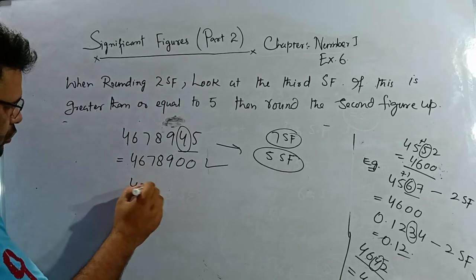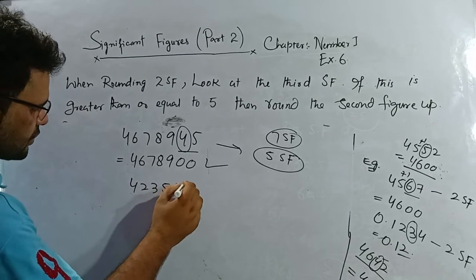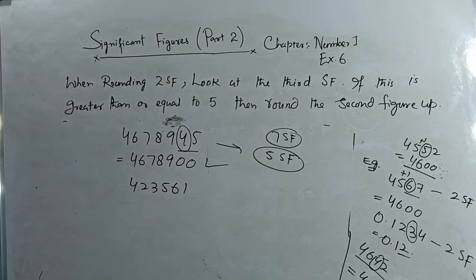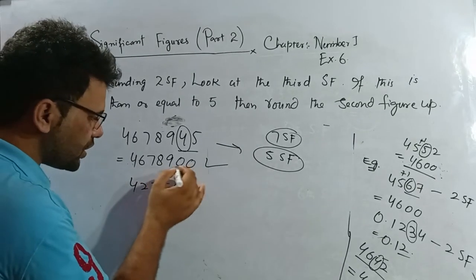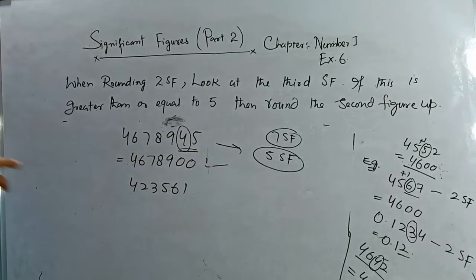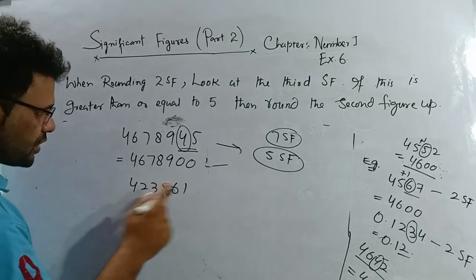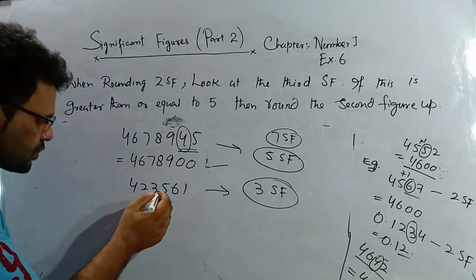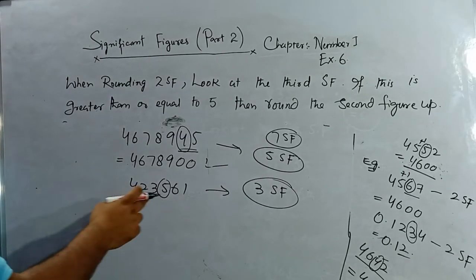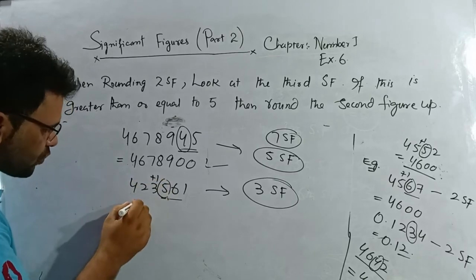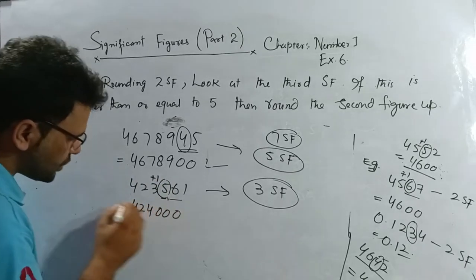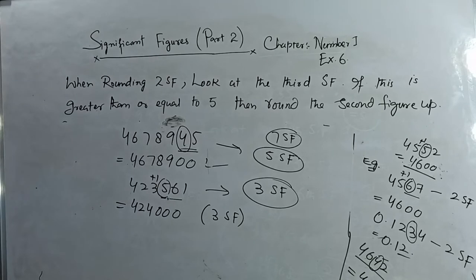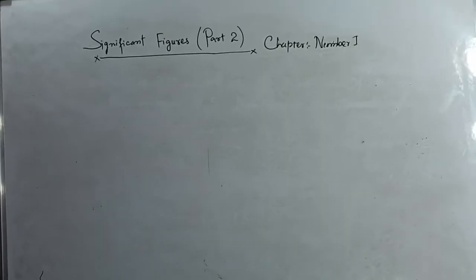One more example: 423561 has six significant figures. To write it correct to three SF, I check the fourth SF which is 5. Since it is equal to five, I add one here — the answer is 424000.